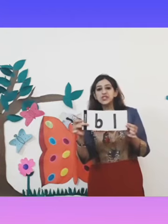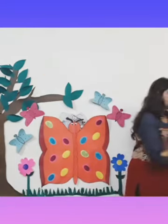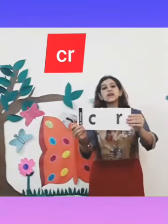Like in our previous session, we learnt a few blends. B and L coming together, we hear the sound BL. G and L coming together, we hear the sound GL. These are L blends. C and R coming together and we hear the sound CR. D and R coming together and we hear the sound DR. These are R blends.